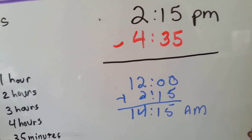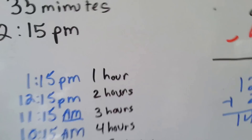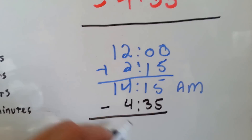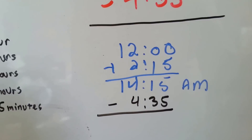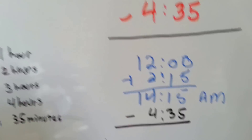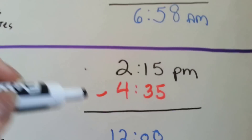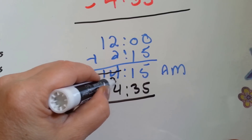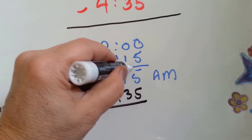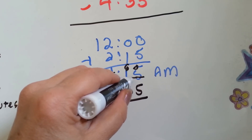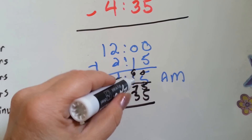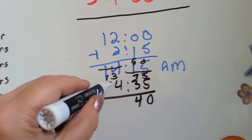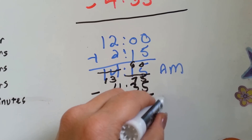Now we're going to take away the 4 hours and 35 minutes. Can you have 1 and take 3 away? No, you can't. So we're going to have to borrow 60 minutes from these 14 hours, just like we did before. The 14 is going to become a 13, and then we're going to add 60 minutes to the minute side. When we add the minutes all up together we get 75 minutes — 0 and 5 is 5, 6 and 1 is 7 — so now we're at 13:75. 5 take away 5 is 0. 7 take away 3 is 4. And 13 take away 4 is 9. And that gets us to 9:40 AM.